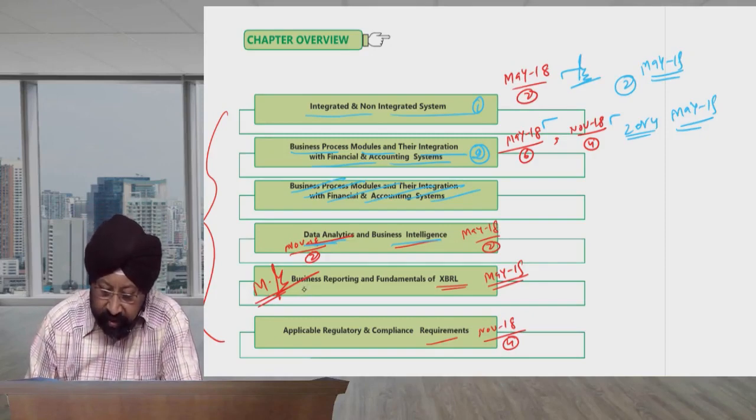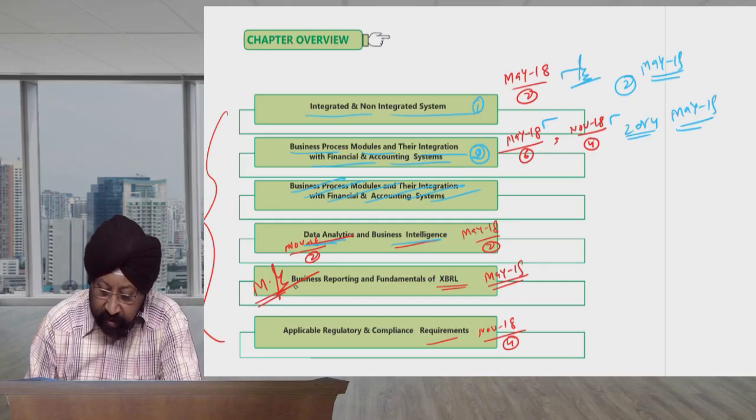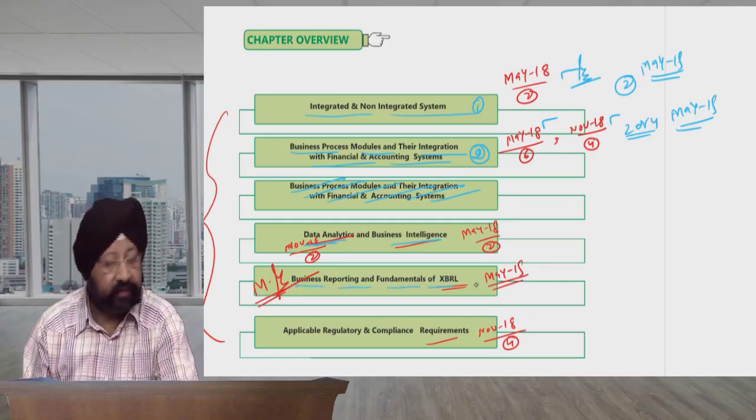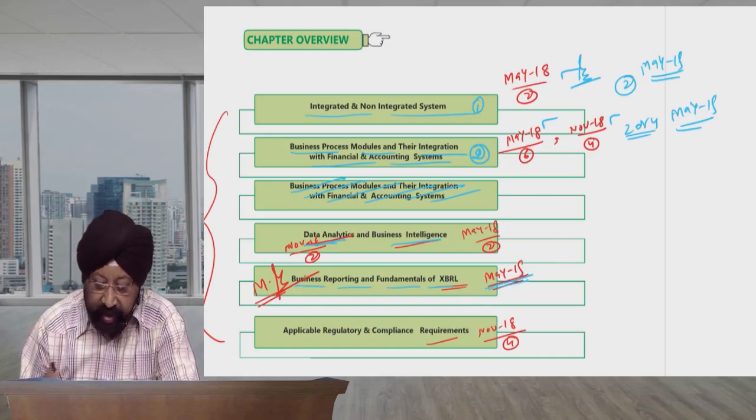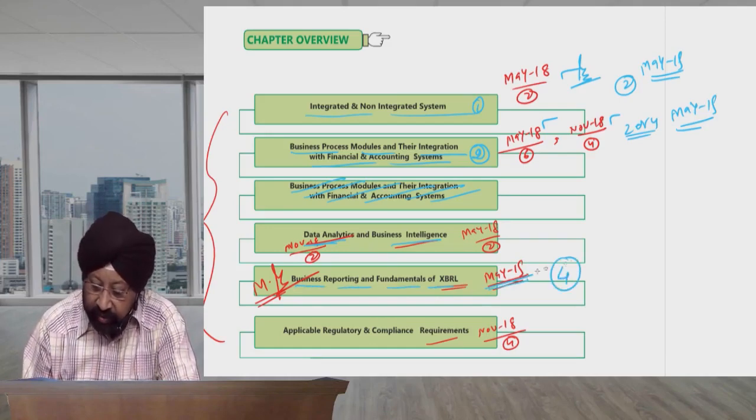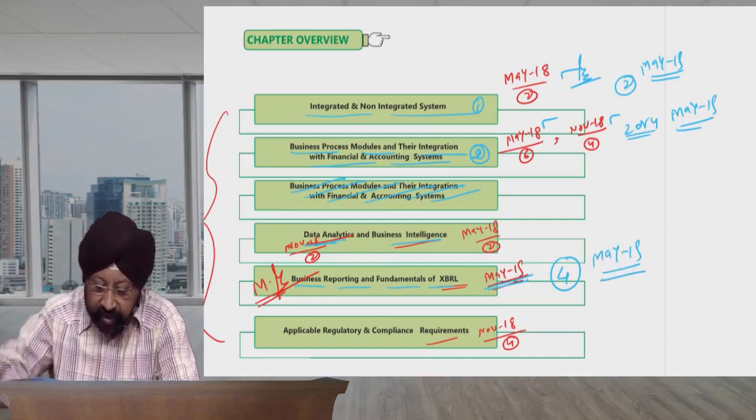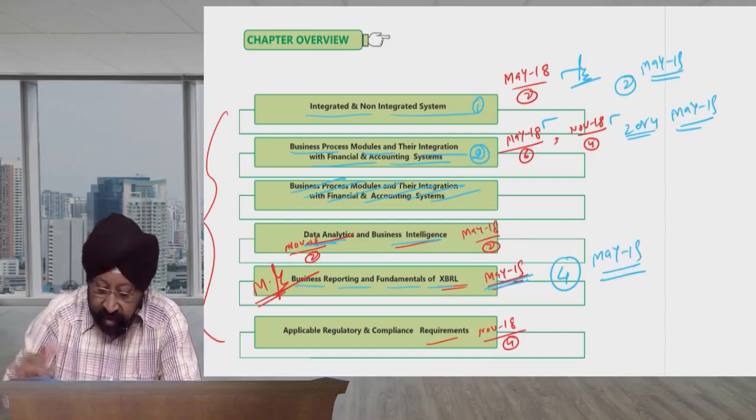This question has not been asked. I have expected it for a long time. This time it is necessary. It is Business Reporting and Fundamentals of XBRL. For May 19, I have marked it important. Four marks can be asked for May 19 on XBRL.